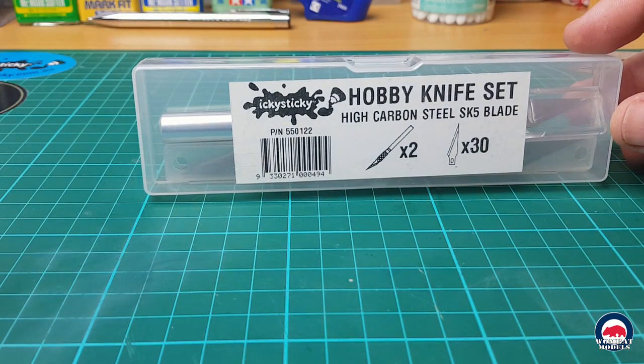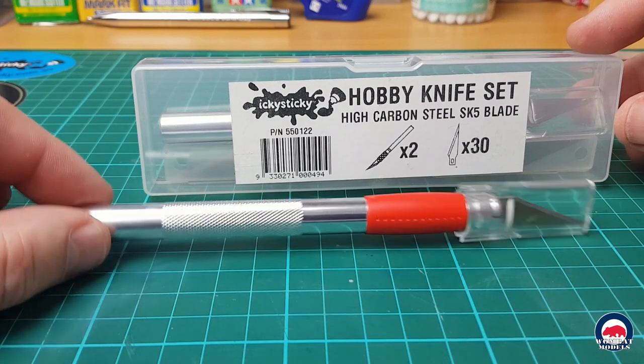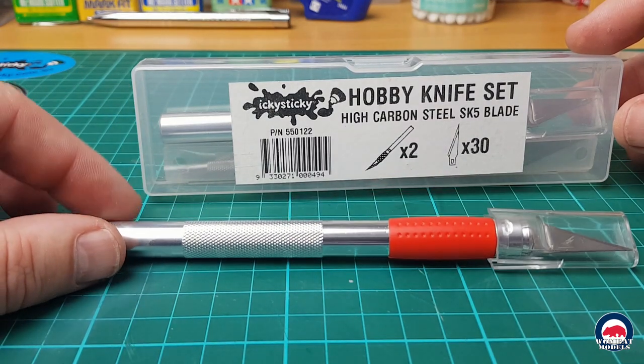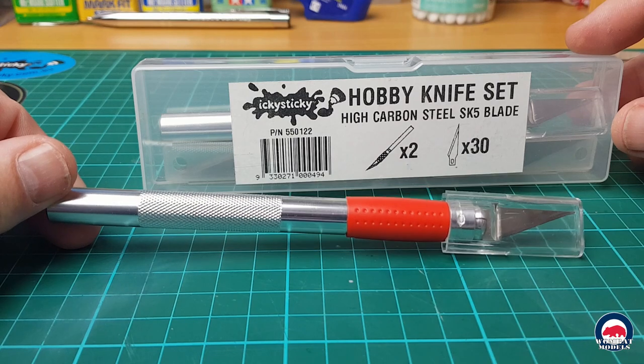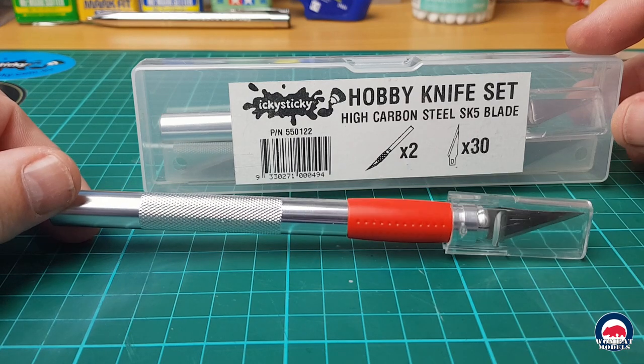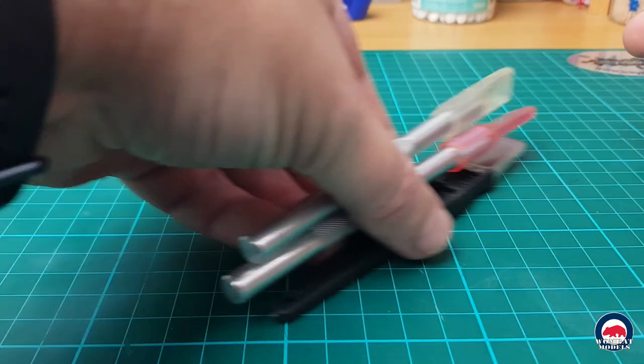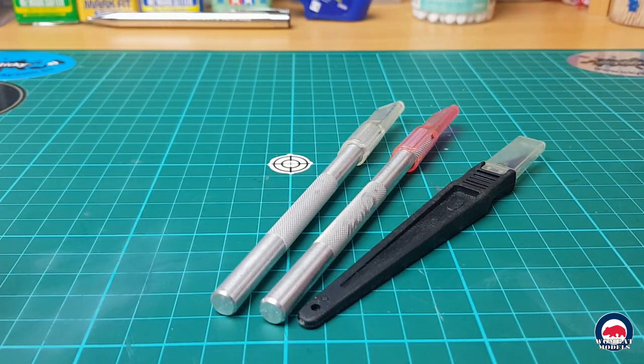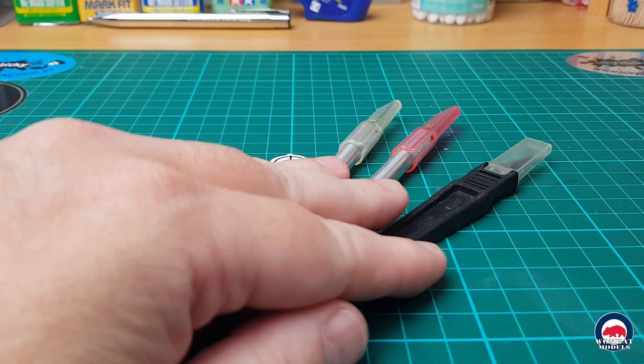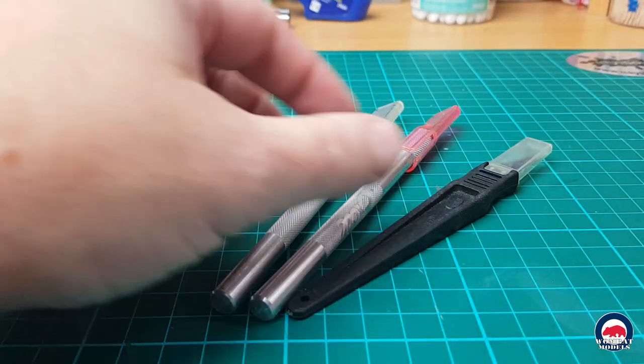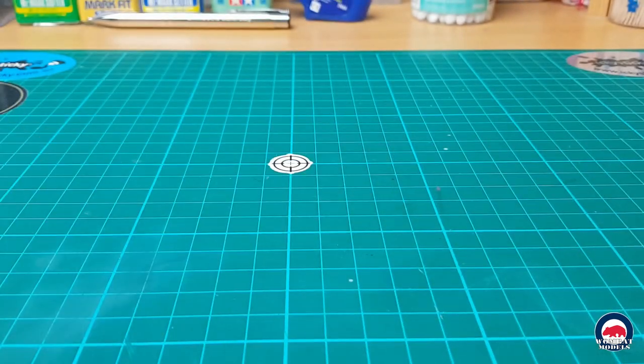Then we have our icky sticky hobby knife set. So it comes with two handles, a set of 30 number two blades. So the icky sticky knife is the one I use for the majority of my cutting work. But I also do have a number of other knives, different blade types and sizes, particularly one that I use for cutting PE.